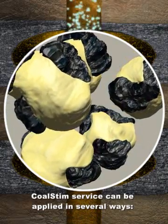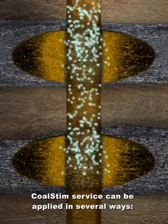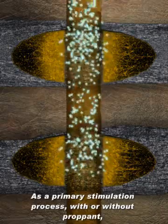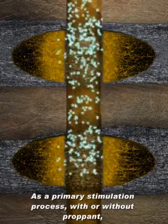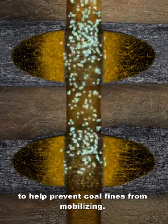Coal Stim service can be applied in several ways. As a primary stimulation process, with or without propant, to help prevent coal fines from mobilizing.